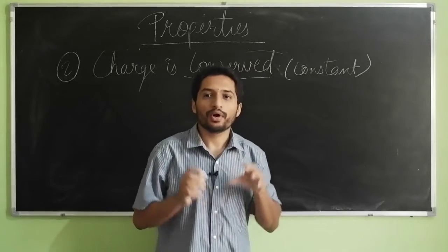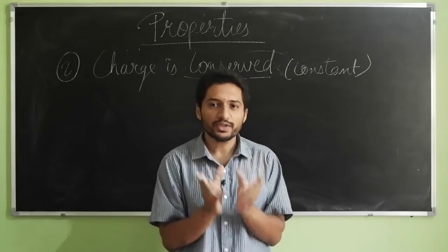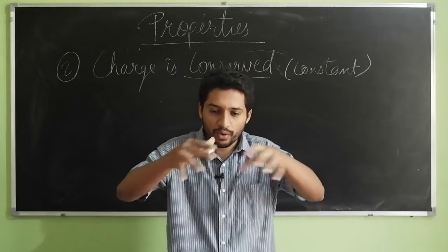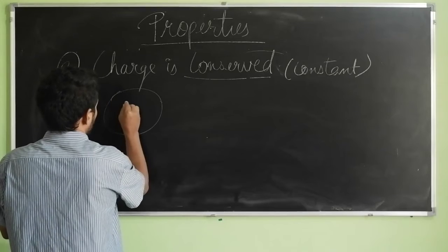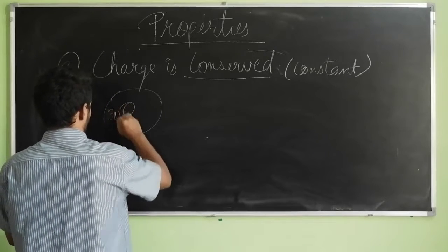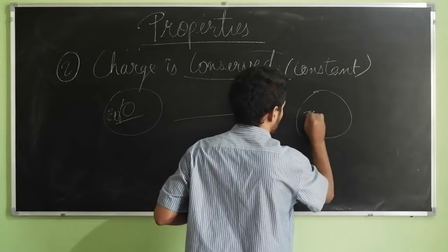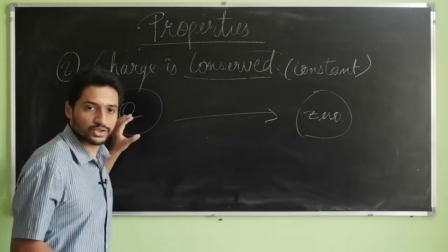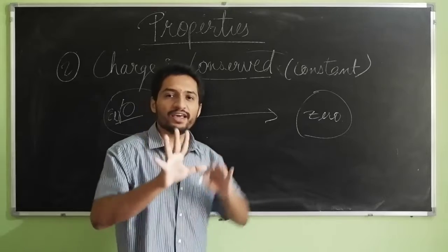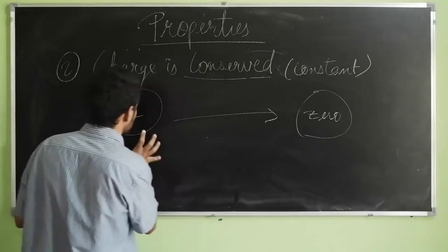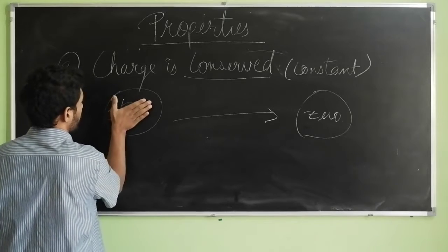For an isolated system, the total charge is conserved. So if I have an isolated system with zero charge, after some time the total charge will still remain zero — the charge is conserved, it remains constant. The only condition is it has to be isolated, meaning there are no external forces acting on it — it is cut off from everything.